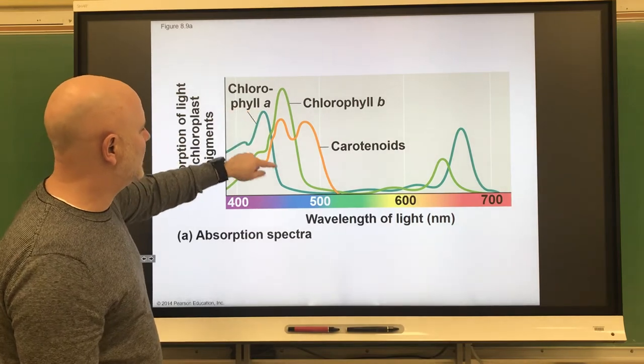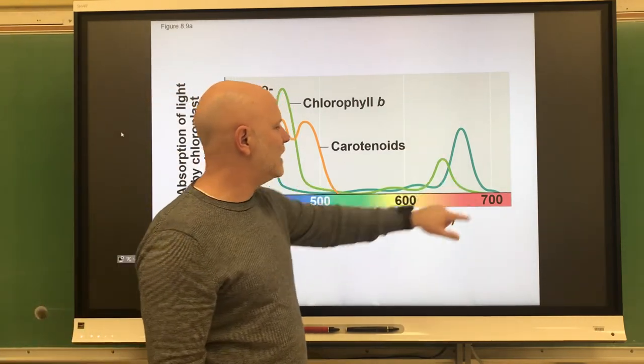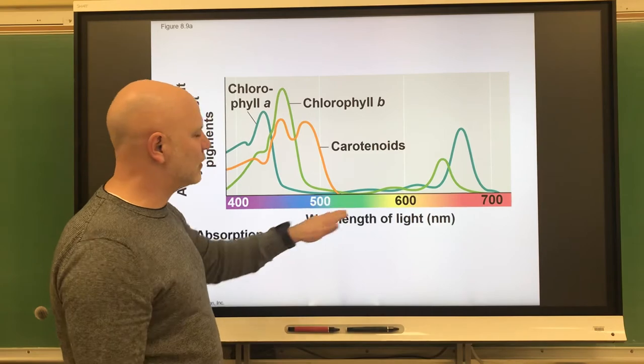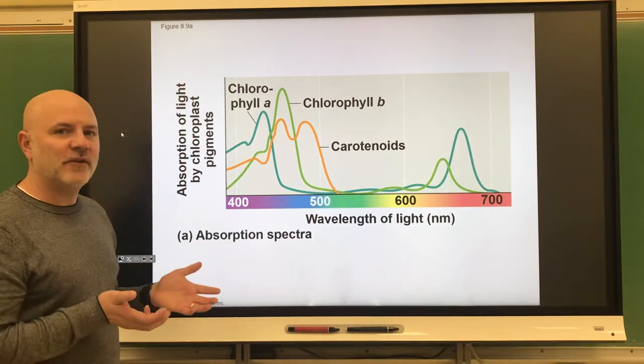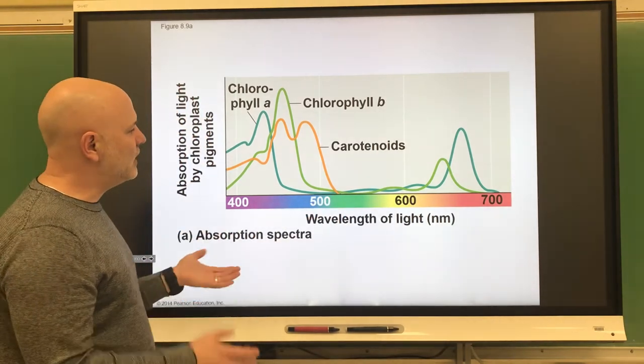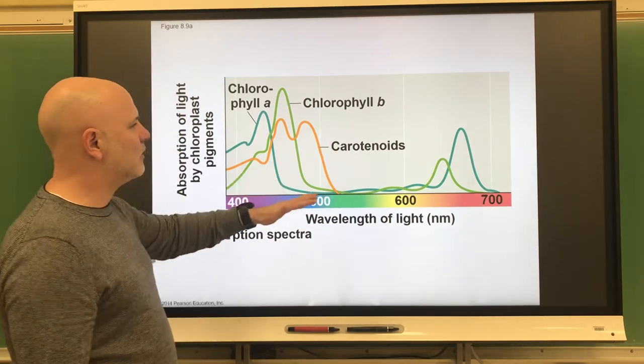Chlorophyll A has a peak over here, and then you can see it has a peak over here, but it's really low in the green area. And so chlorophyll A, being the main photosynthetic pigment, looks green to us because it reflects mainly green light.